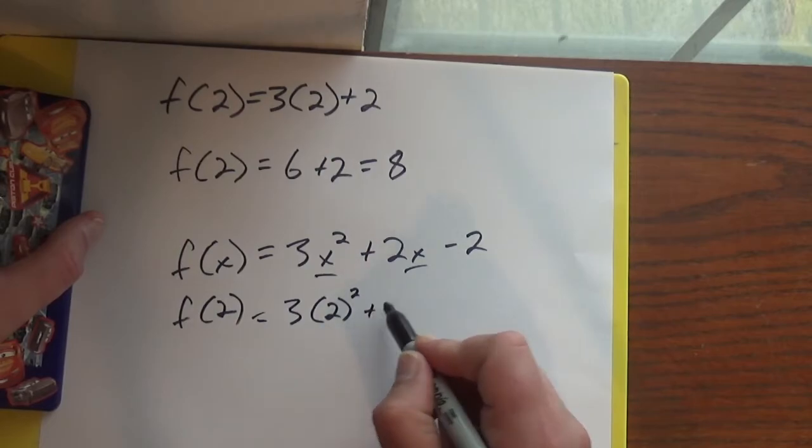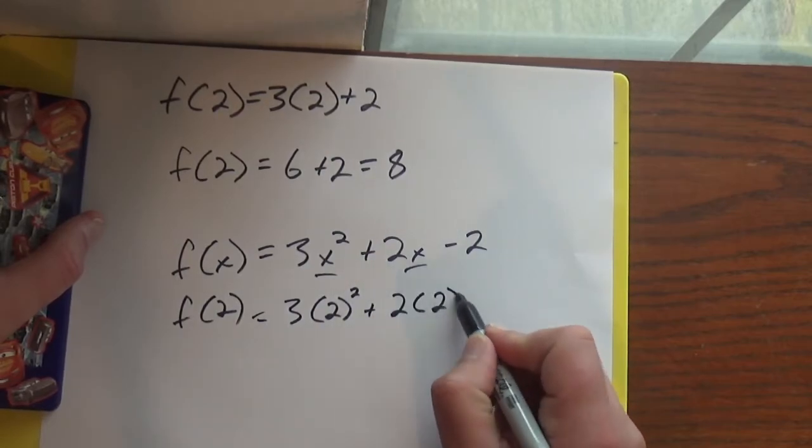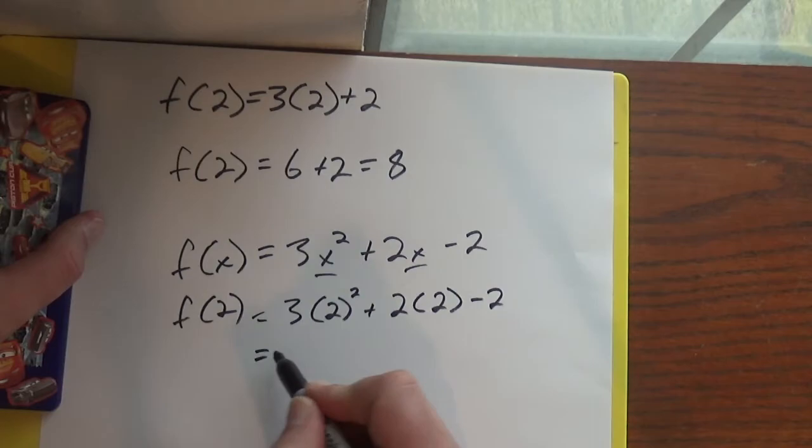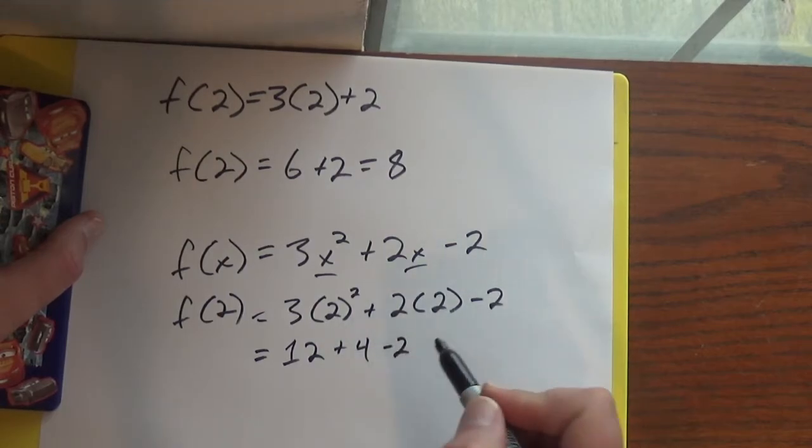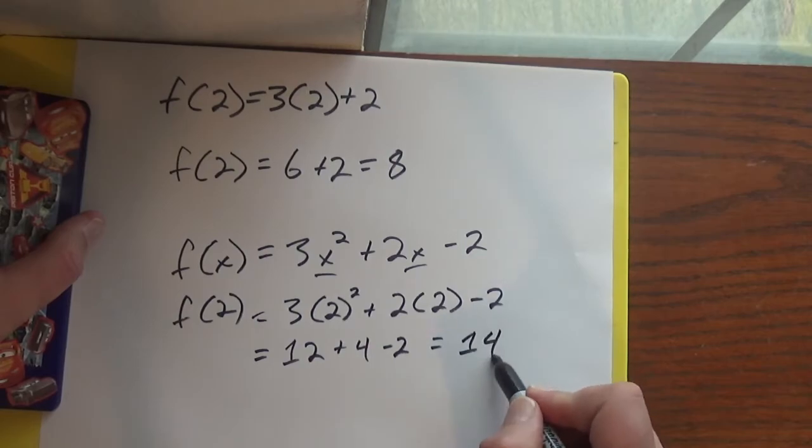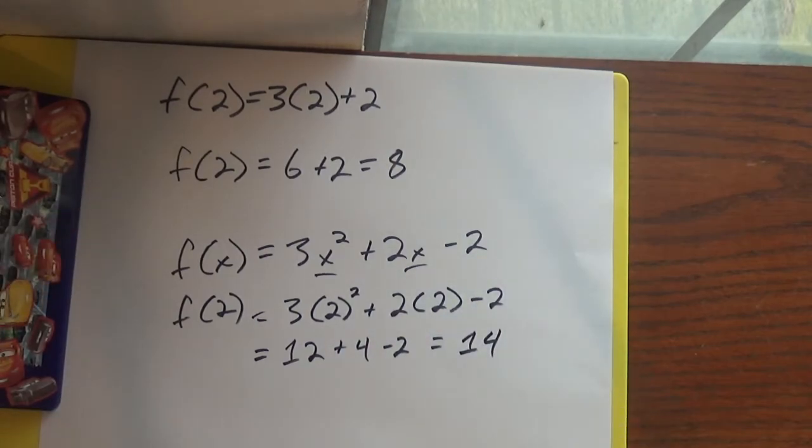With this, it doesn't matter, but if I had negatives, it would definitely matter. So 2 squared is 4 times 3 is 12. 2 times 2 is 4 minus 2. So we got 14. All right.